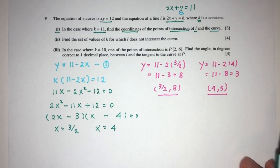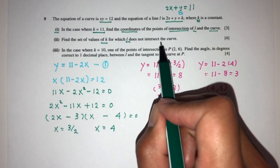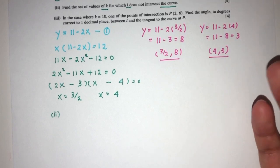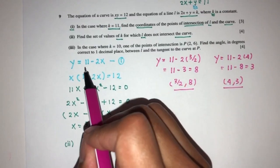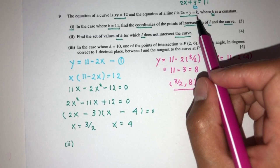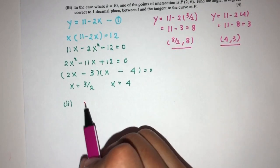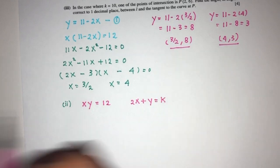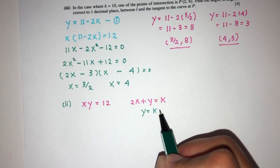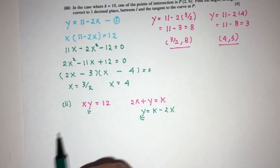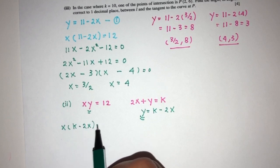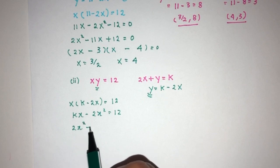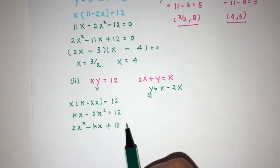For Part 2, we have to find the set of values of k for which the line l does not intersect the curve — meaning they do not meet and there is no real solution. We don't know k now. The curve is xy equals 12 and the line is 2x plus y equals k. From the line, y equals k minus 2x. Substituting into the curve: x times (k minus 2x) equals 12, so kx minus 2x squared equals 12, giving 2x squared minus kx plus 12 equals 0.